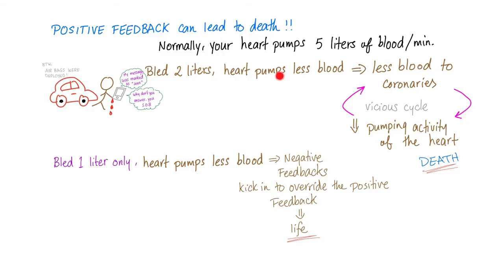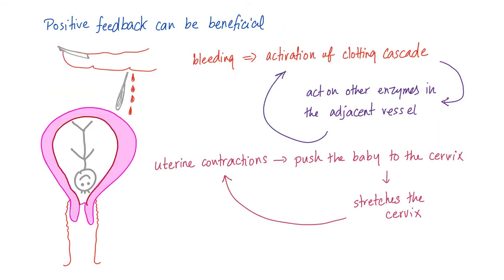So positive feedback in the first example can lead to death. But is positive feedback always bad? No — it can be beneficial. For instance, when you bleed, activation of the clotting cascade leads to activation of other enzymes in adjacent vessels. They activate the cascade of other tissues, and you stop bleeding.